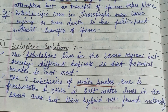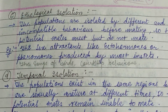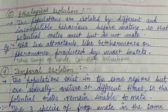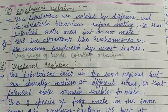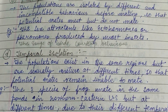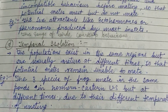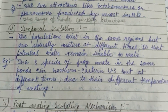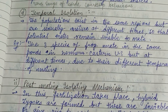Their hybrids are not found naturally. Ethological isolation refers to changes in sexual behavior or incompatible behavior before mating. Examples include sex attractants like ectohormones, pheromones, the song of the birds, courtship behavior, etc.